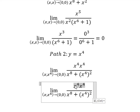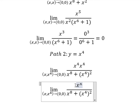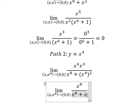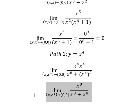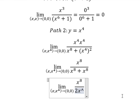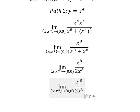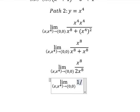So this one is x to the power of 8. This one is also x to the power of 8. So we sum this and we have 2x to the power of 8. Now we simplify and we have one over two.